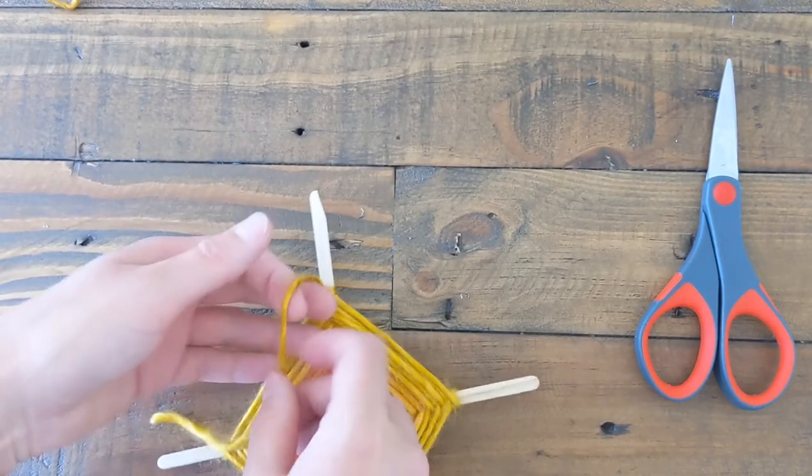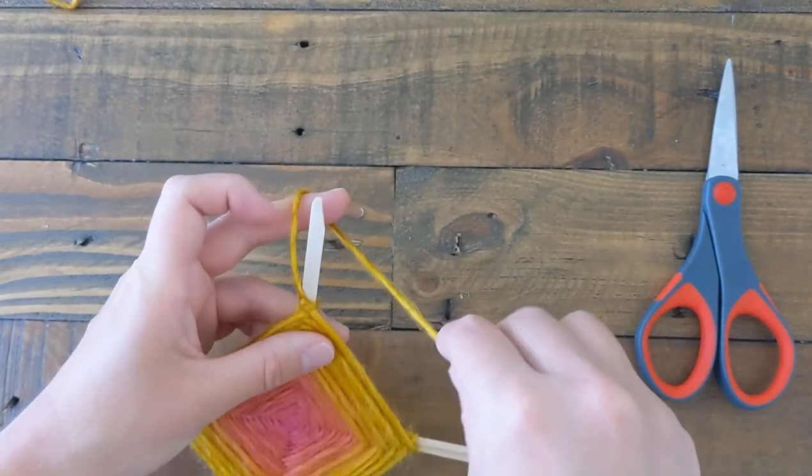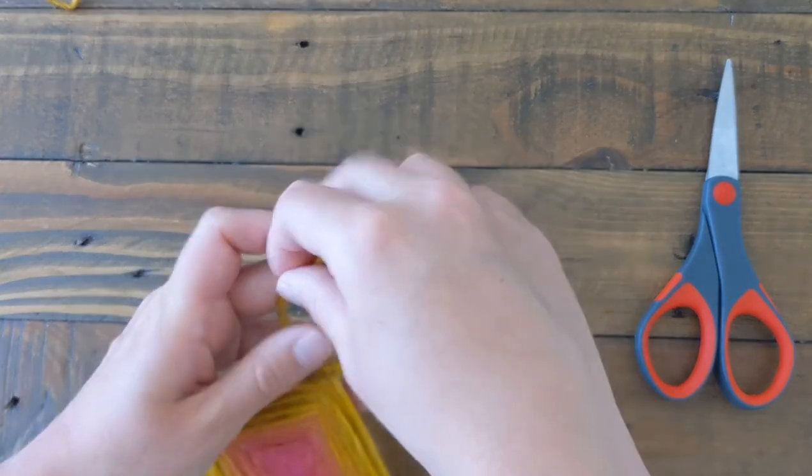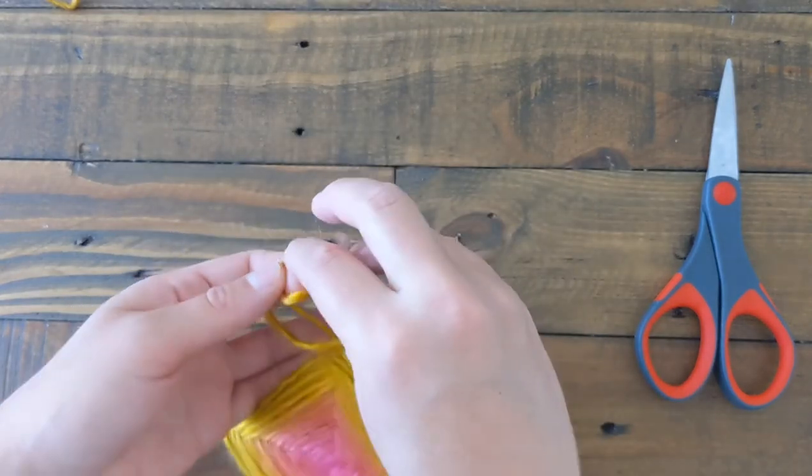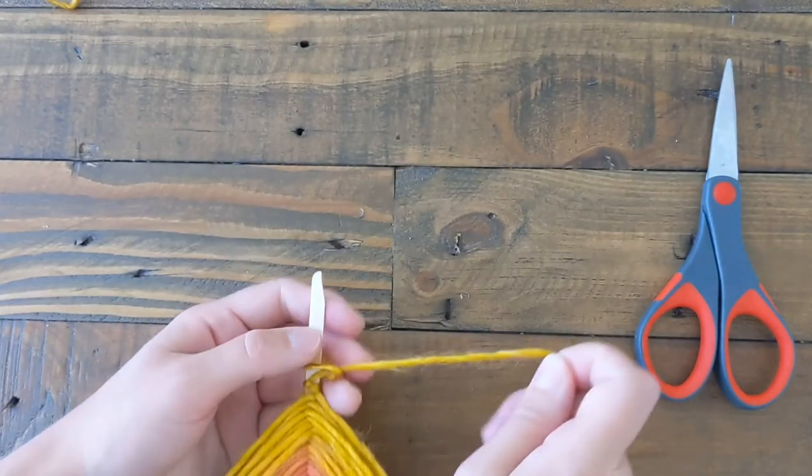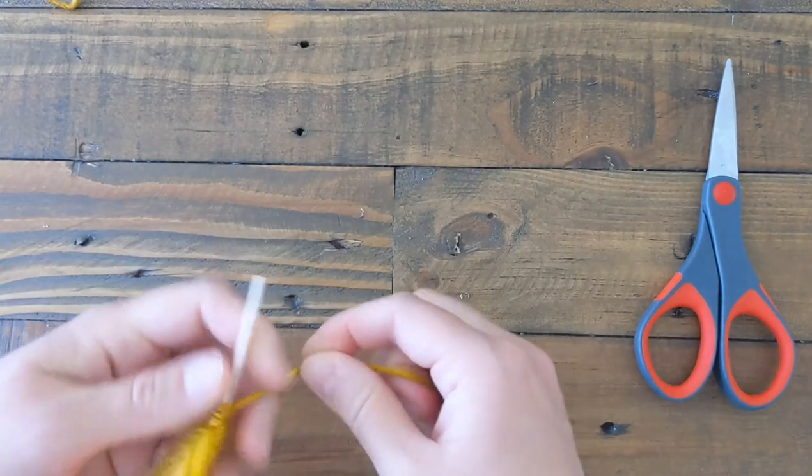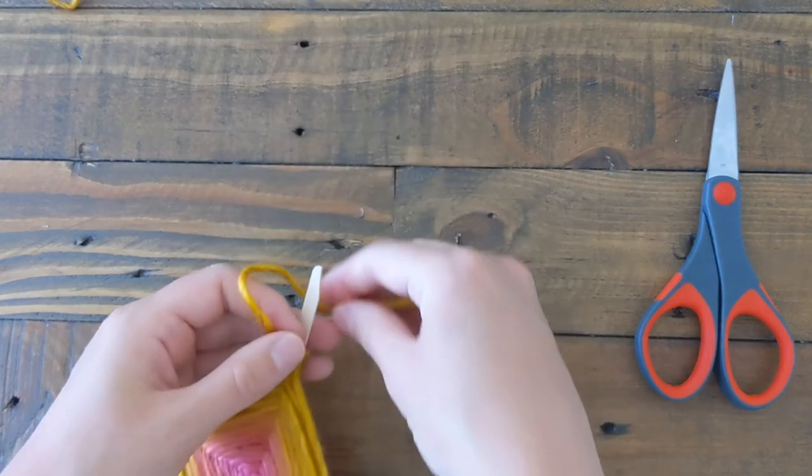So there you go. It's already tied, but for good measure, we should do at least another knot. This one will be easier to do because the yarn's not loose. And again, just pull it down and tight, pull it down and tight, and maybe one more.